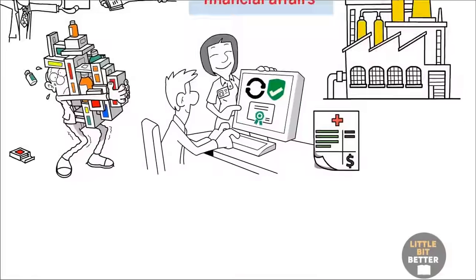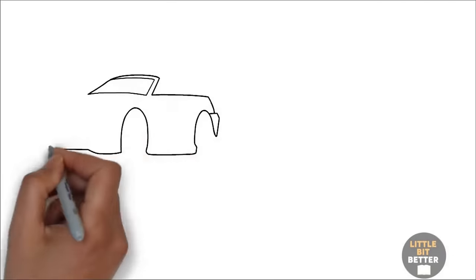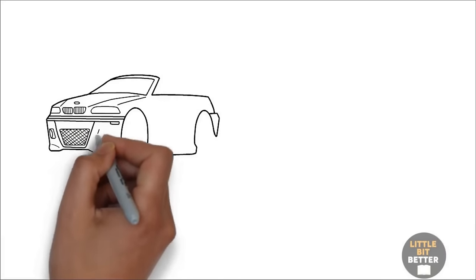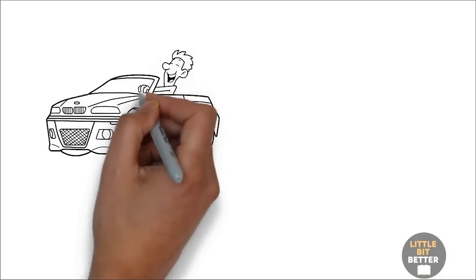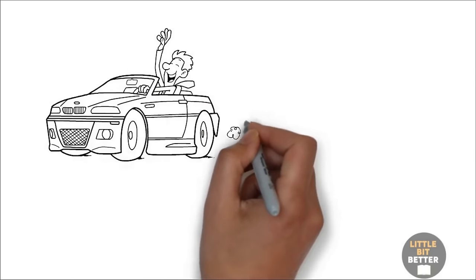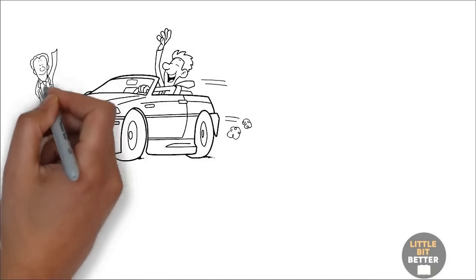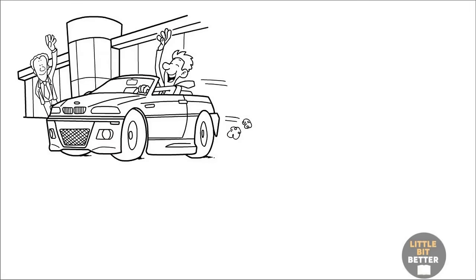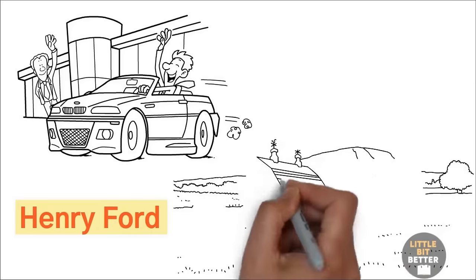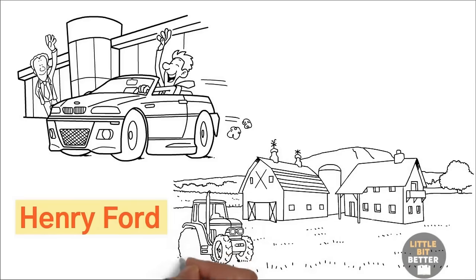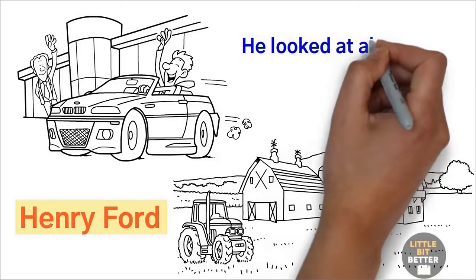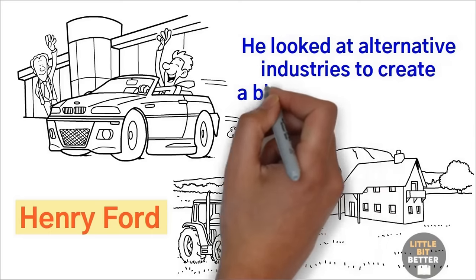Another interesting example, you probably know that Ford Model T was the first mass-produced affordable car that revolutionized the car industry. This was all possible because Henry Ford used an assembly line production system where one worker did only one single task. Henry Ford got the idea of the assembly line production from visiting a slaughterhouse and grain factories. In other words, he looked at alternative industries to create a blue ocean opportunity.